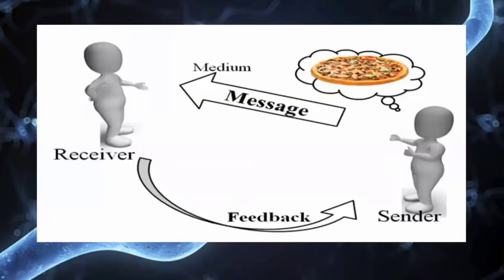For example, humans communicate with each other through conversation. The person sending the message is known as the sender, who wants a specific task performed. The message received by the other person makes them the receiver, who gives feedback and performs the specific task.